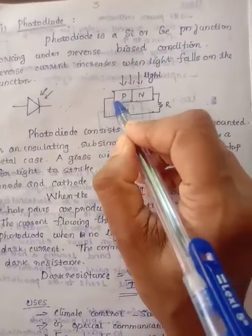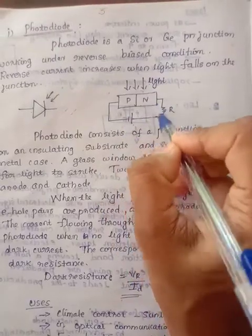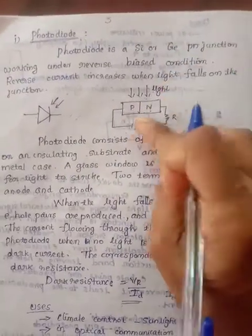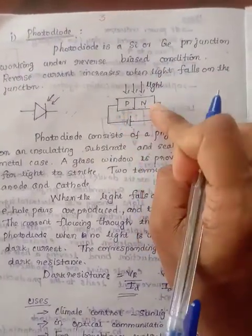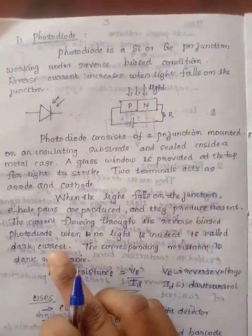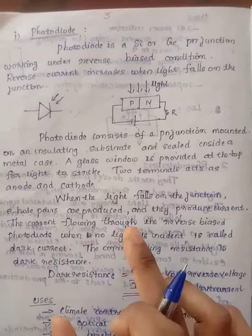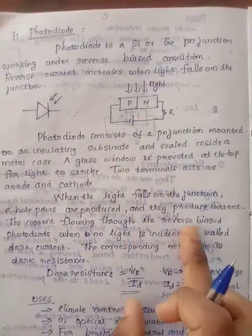This is the reverse biased condition. A current flows in this PN junction diode when it is reverse biased, even though no light is produced. That current is known as dark current, and the corresponding resistance is known as dark resistance.